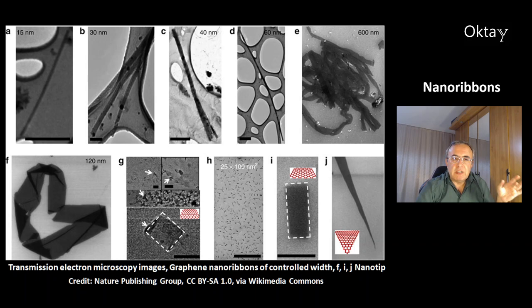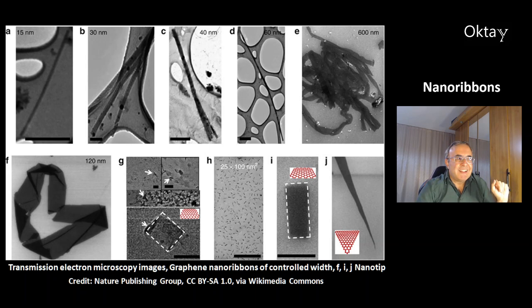These are transmission electron microscopy images of graphene nanoribbons with controlled widths. Picture F shows a nice constant width of the graphene nanoribbon. Picture I shows the same. Picture J is also very interesting because it shows a nanotip.